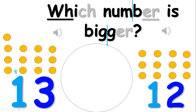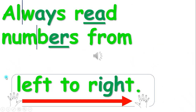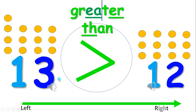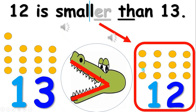Which number is bigger? Is it 13 or 12? Thirteen is bigger than 12. Thirteen is greater than 12. Which number is smaller? Twelve is smaller than 13.